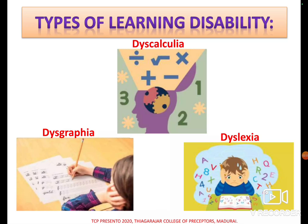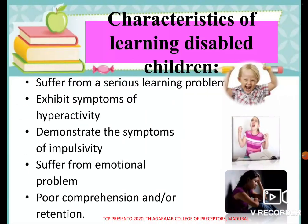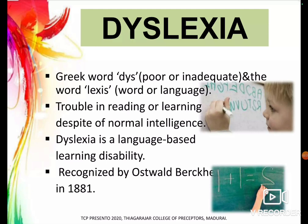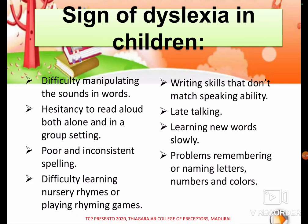There are three main learning disabilities: dyslexia, dysgraphia, and dyscalculia. Let's understand what dyslexia is — this question appears in previous test papers too. The Greek word 'dys' means poor or inadequate, and 'lexis' means word or language. Dyslexia means trouble in reading or learning despite normal intelligence. Remember: dyslexia affects reading. Dyslexia is a language-based learning disability.